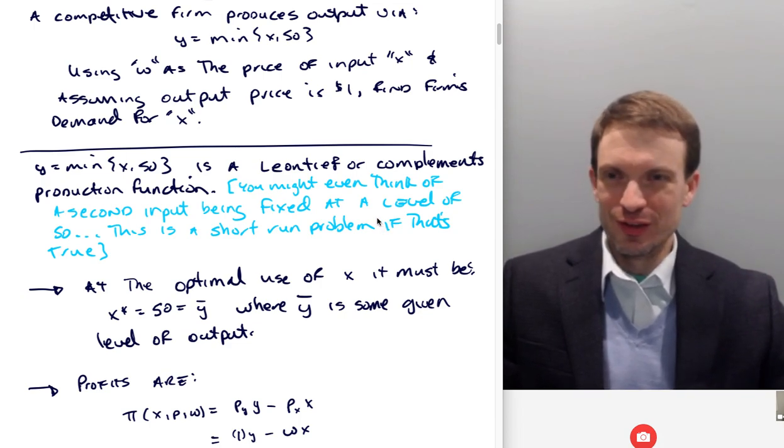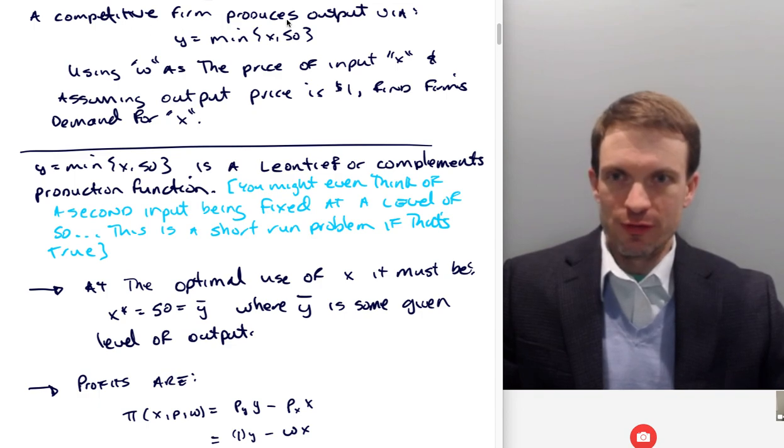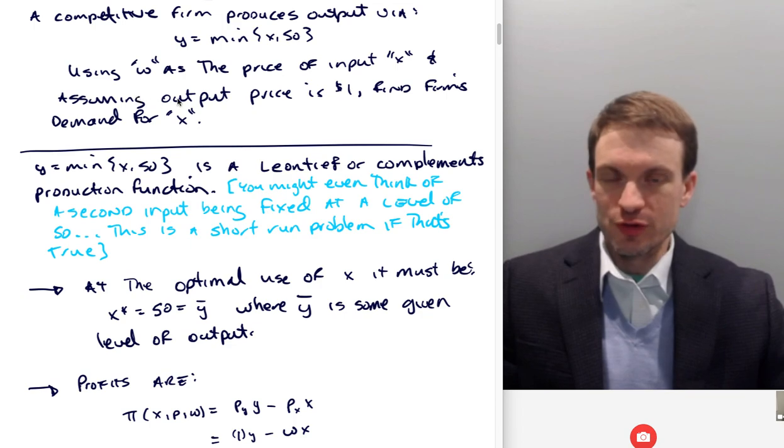Okay, hello and welcome. So in this video, I'm going to walk through this exercise where we are trying to find the firm's optimal demand for input X, given the following production technology, and making some assumptions about the price of input, and the price of the output. We're saying a competitive firm produces output via the following production technology, Y is equal to minimum of X and 50. Using omega as the price of input X, and assuming the output price is $1, find the firm's demand for X.